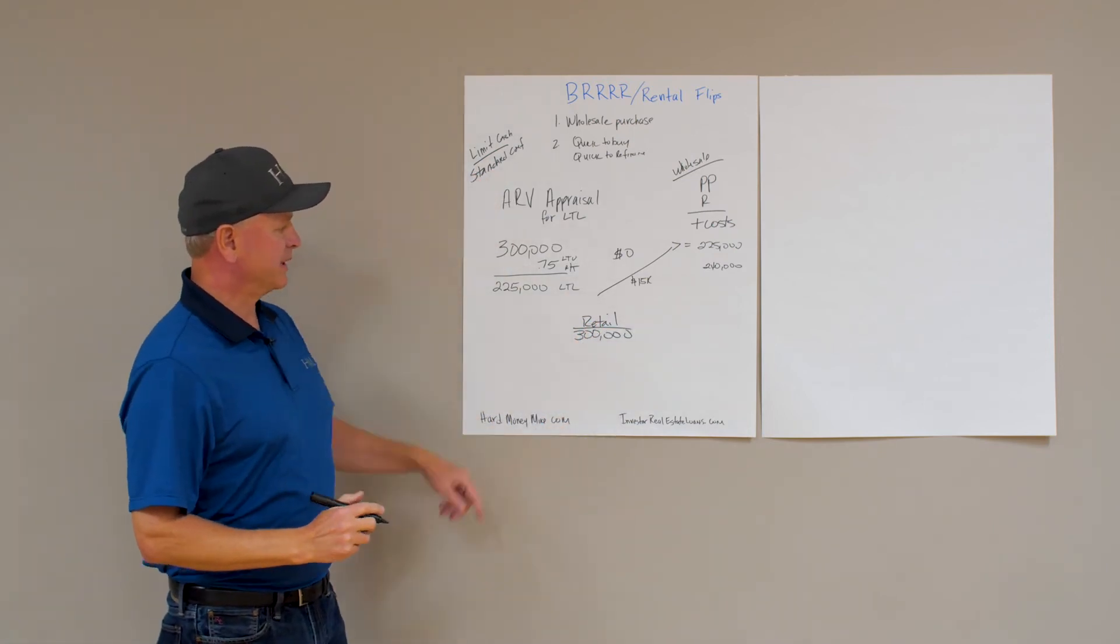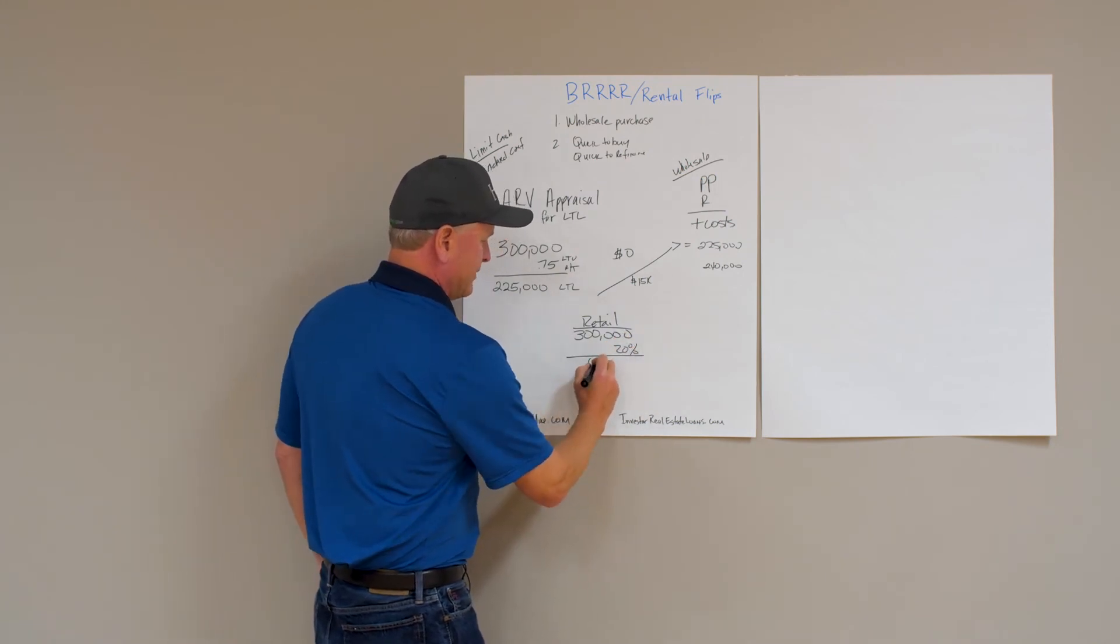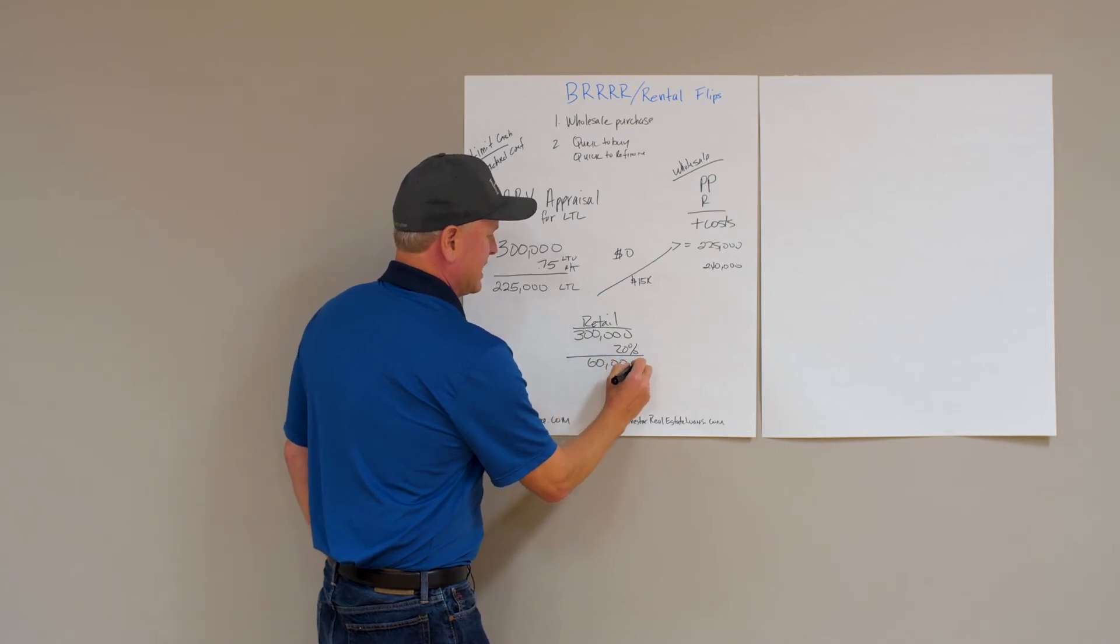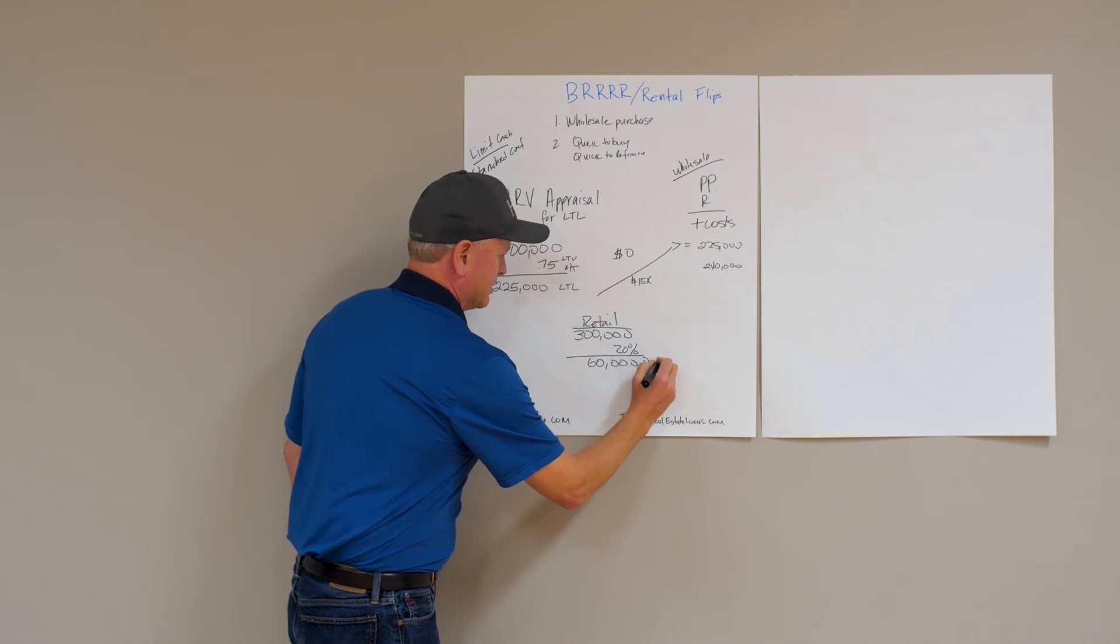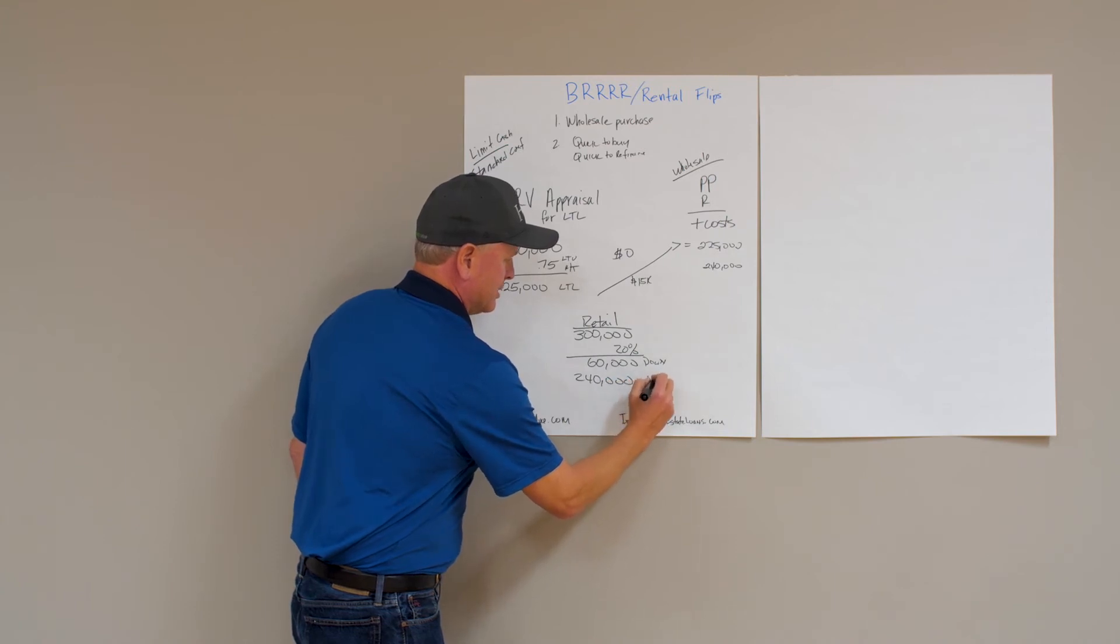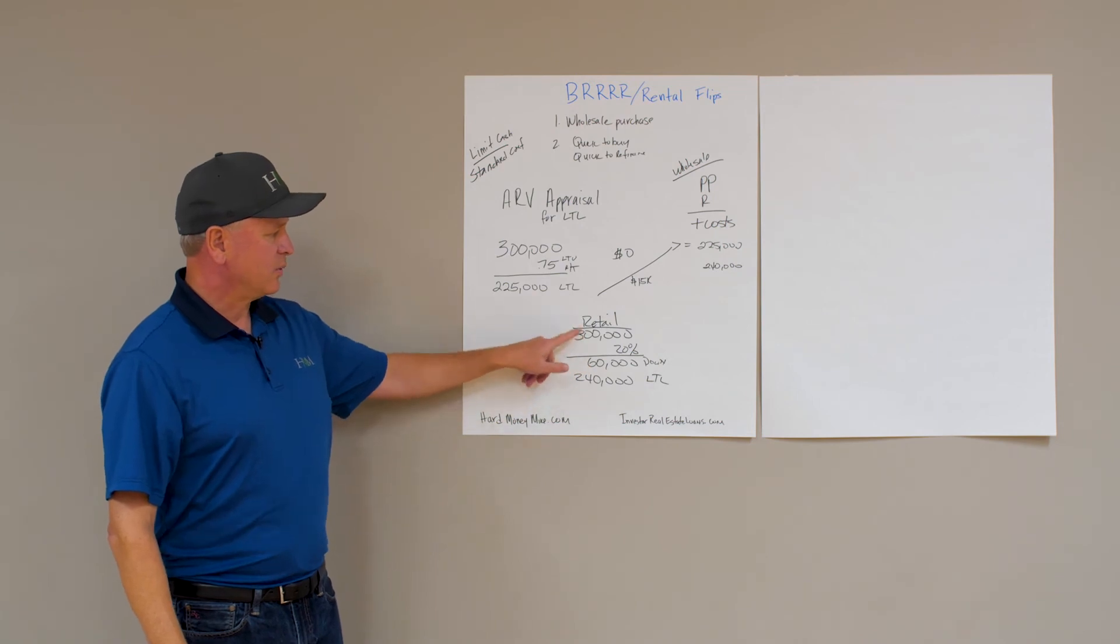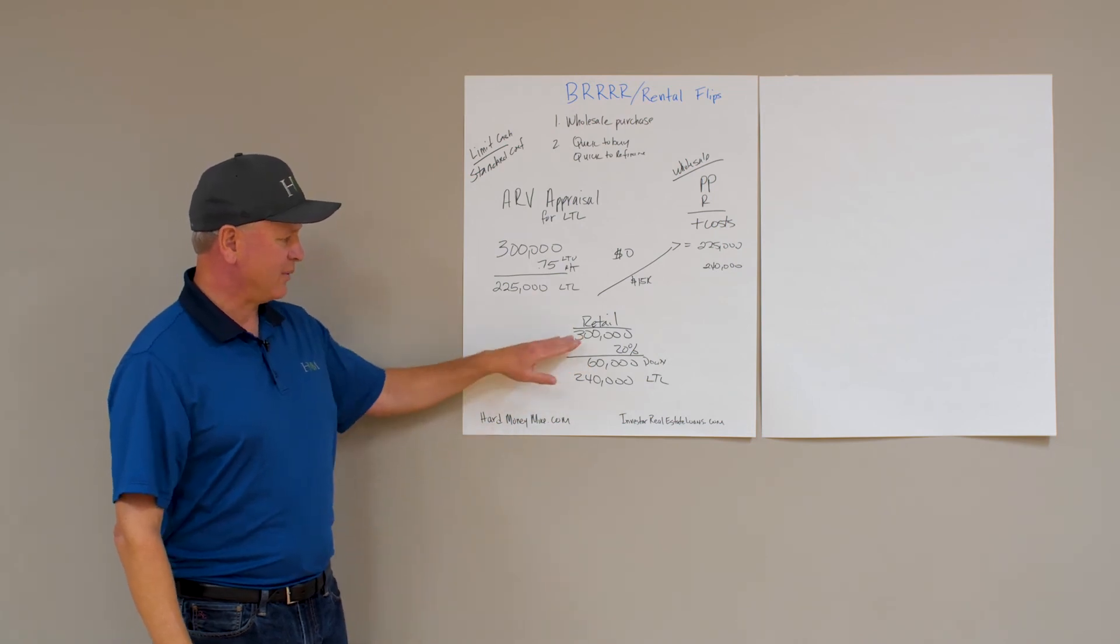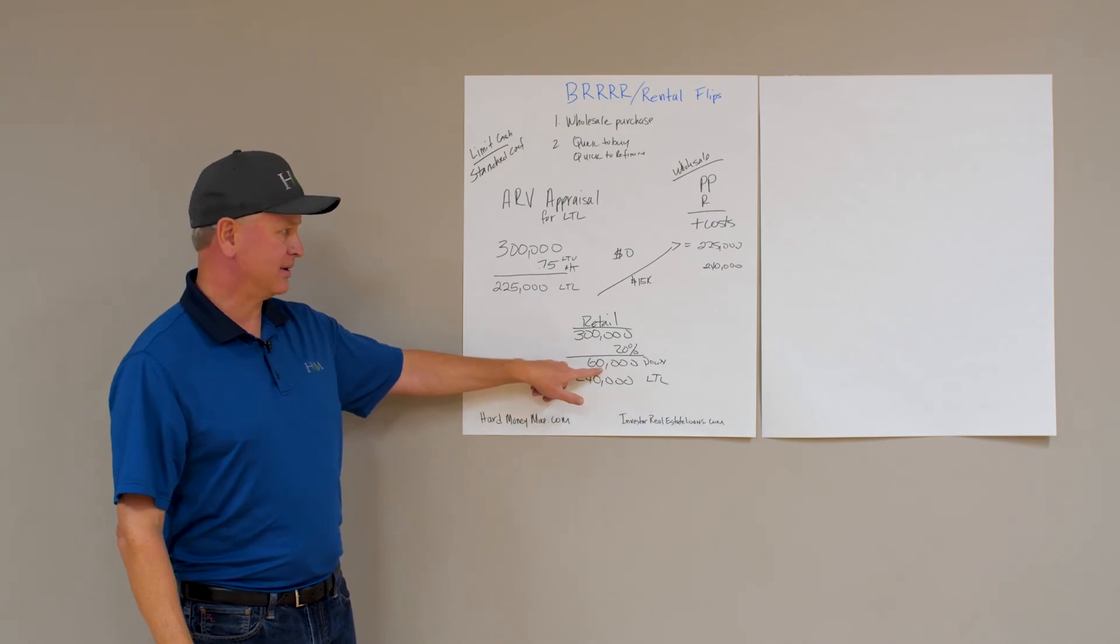Using a standard conforming loan, we're going to have to put 20% cash down. So that means a down payment of $60,000. And we have a new loan for $240,000, a long-term loan. So $240,000 plus $60,000 equals $300,000. We really haven't created any equity in this, and we have $60,000 into the transaction.